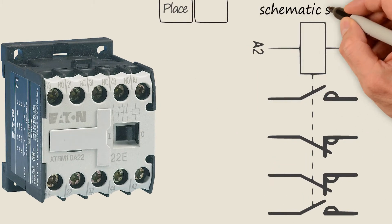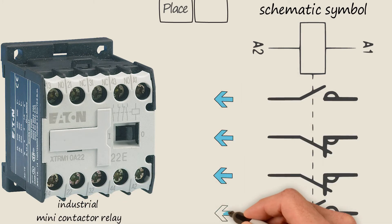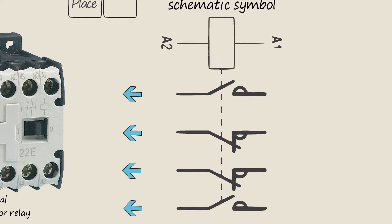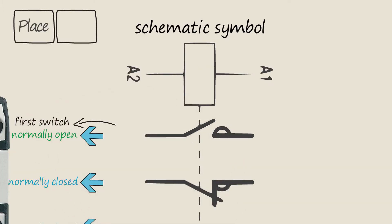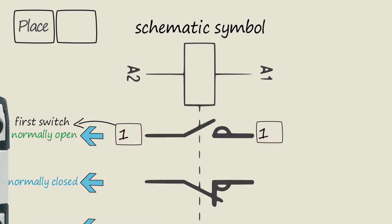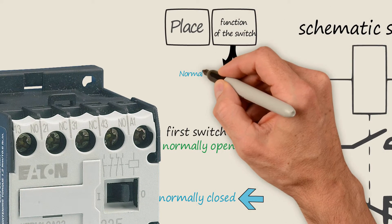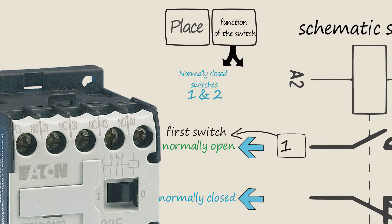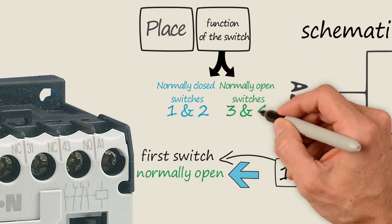This is the schematic symbol of an industrial mini contactor relay with four electrically isolated switches — two of them are normally open and two of them are normally closed. This is the first switch, so each terminal of this specific switch is given the first digit of one. The second digit indicates the function of the switch: normally closed switches are given one and two, and normally open switches are given three and four.